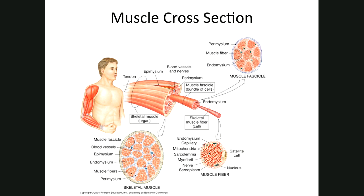Now the deep fascia components: the first is the epimysium. Epi means upon; the -mysium relates to muscle. The epimysium is the dense fibrous connective tissue covering the entire muscle — it's the deep connective tissue or deep fascia. It covers the whole muscle and then goes in to cover bundles of muscle fibers.